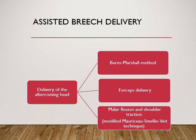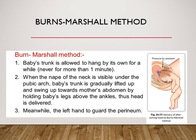In the Burns Marshall method, the baby's trunk is allowed to hang by its own weight for a while. Once the nape of the neck is visible under the pubic arch, the baby's trunk is gradually lifted upward and swung toward the mother's abdomen by catching hold of the baby's legs just above the ankles. Meanwhile, the left hand is used to guard the perineum and the head is slowly delivered.